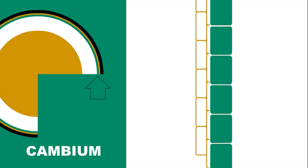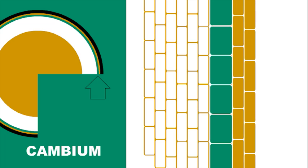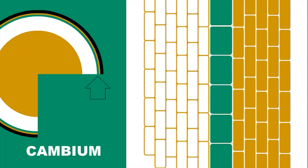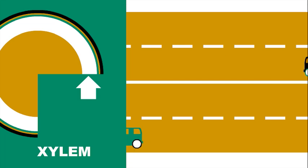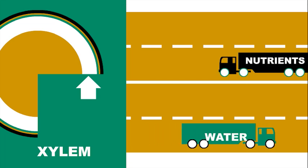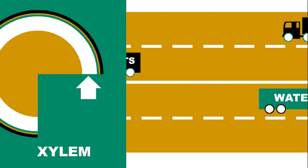Next comes the cambium. This is the growing part of the trunk. On one side, it creates new wood cells, and on the other, it creates new bark. Under the cambium is the xylem, which is made up of young wood. It's the superhighway of water and nutrients from the roots to the rest of the tree.